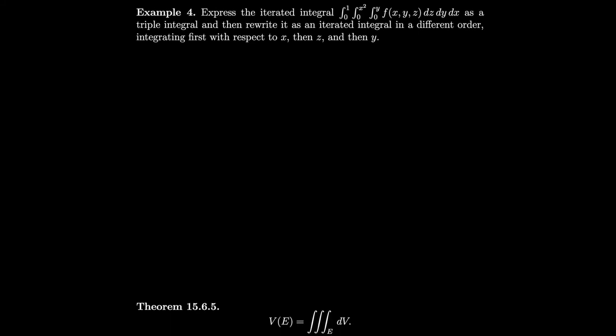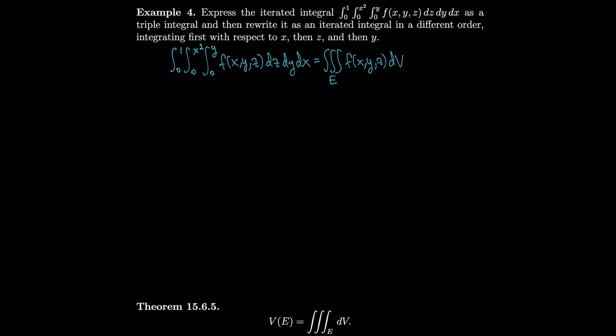Next, let's express the iterated integral from 0 to 1, 0 to x², 0 to y of f(x, y, z) dz dy dx as a triple integral over E, and then rewrite it as an iterated integral integrating first with respect to x, then z, then y. We don't need the function f to change the order of integration — we only need to look at the region we're integrating over. By Fubini, this is a triple integral over E of f(x, y, z) dV.